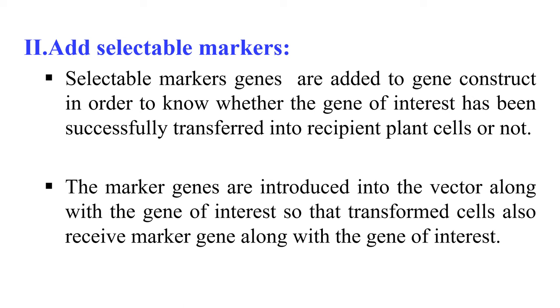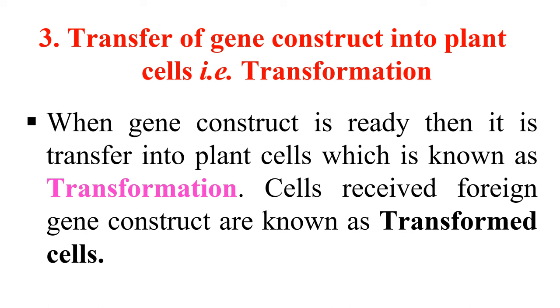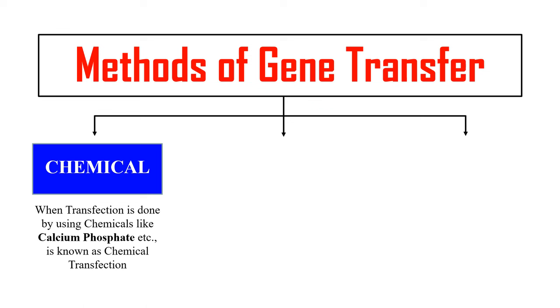The next step is transfer of this gene construct into the plant — now we have our gene construct with the gene of interest, the expression vector elements, and the marker genes, and we need to transfer it to the plant cell. This step is known as transformation. Transformation can be done by three methods. The first is the chemical method, where we use chemicals to transfer our gene to plant cells — for example, calcium phosphate precipitation or DEAE dextran precipitation.